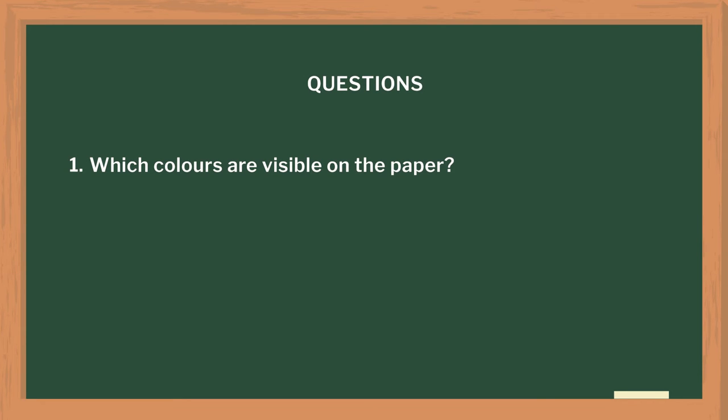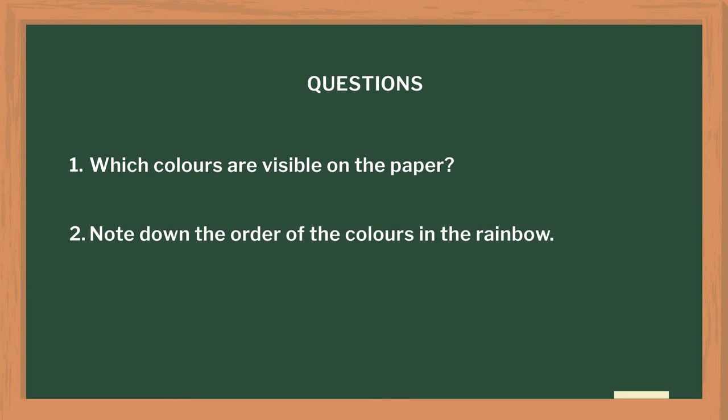Ask your students to observe the rainbow. While they are observing, you can ask them which colors are visible on the paper. Once the students have identified it as a rainbow, ask them to note down the order of colors. Students often ask how the rainbow is formed in the sky, so I try to explain using videos and tell them the properties of light which cause a rainbow.